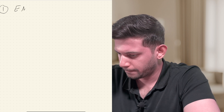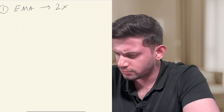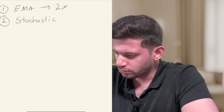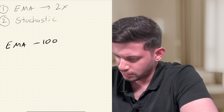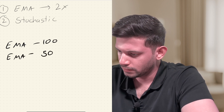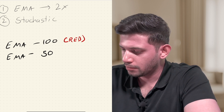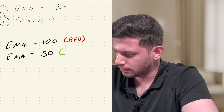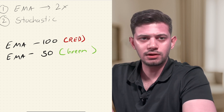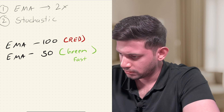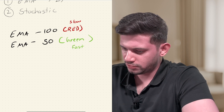Let's understand what the strategy is about. We're going to need just two indicators. The first is EMA — exponential moving average — and we need two of these. The second is the stochastic indicator. For the EMAs, the first will be EMA 100 shown in red, which is the slow moving EMA as it considers the last 100 candles. The second will be EMA 50 shown in green, which is the fast moving EMA.